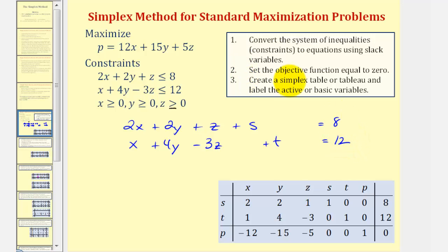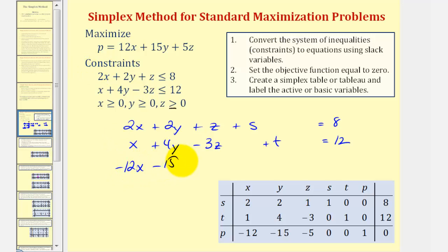In step two we set the objective function equal to zero. We want p to remain positive, so we subtract the variable terms on both sides, giving us negative 12x minus 15y minus 5z plus p equals zero.